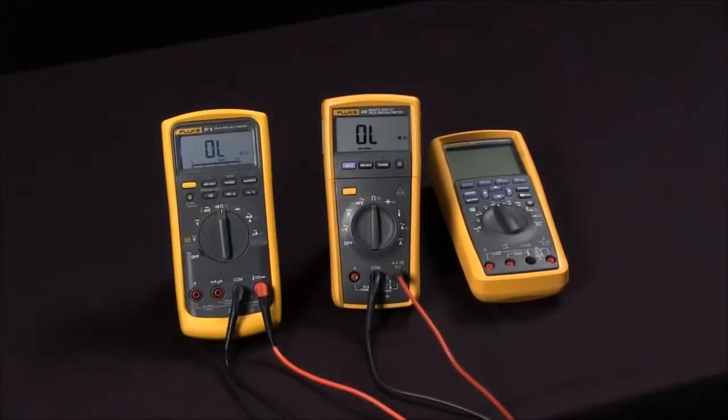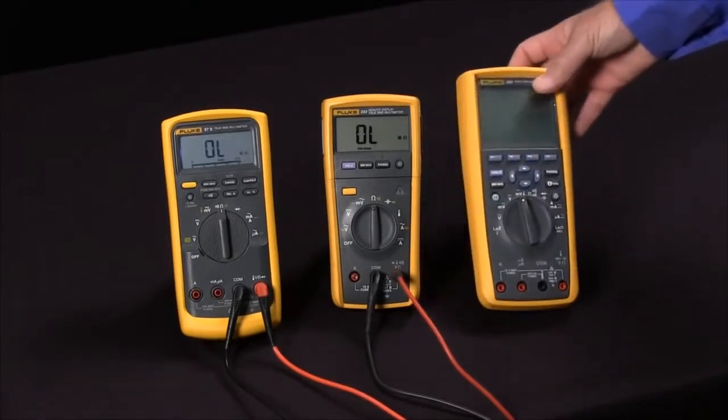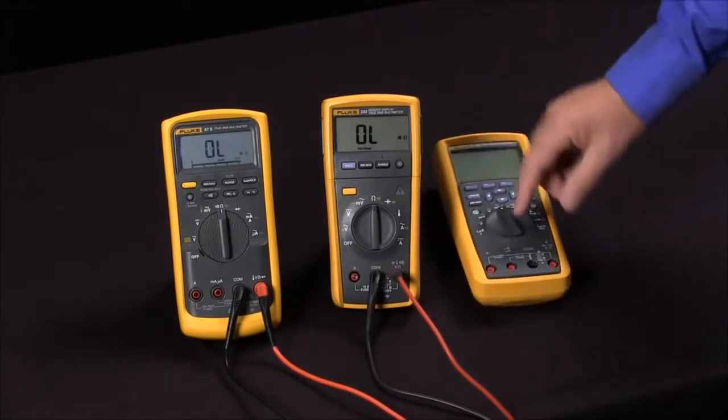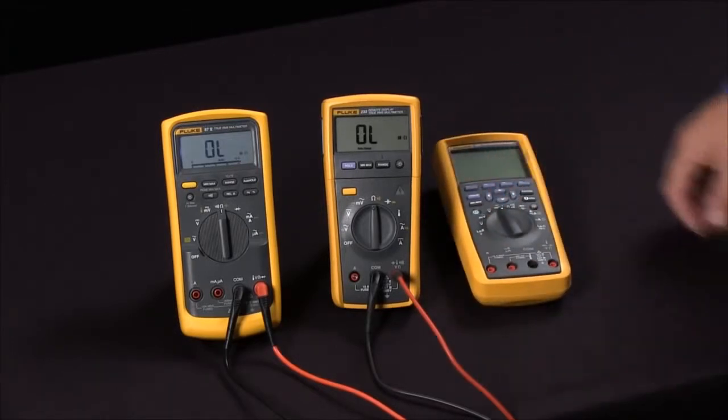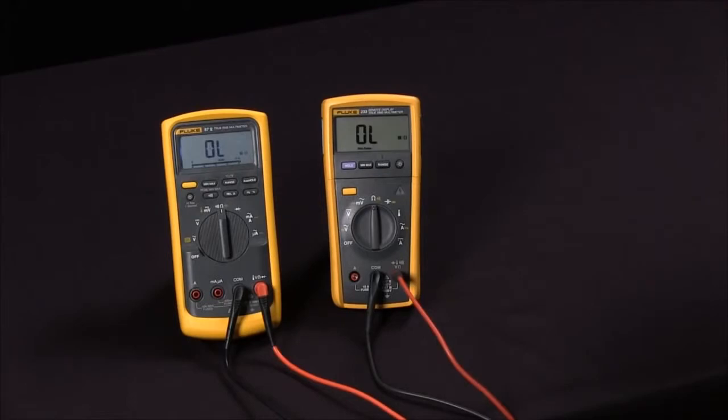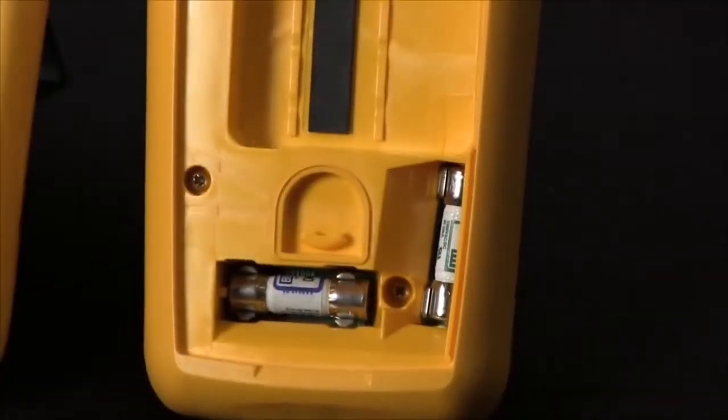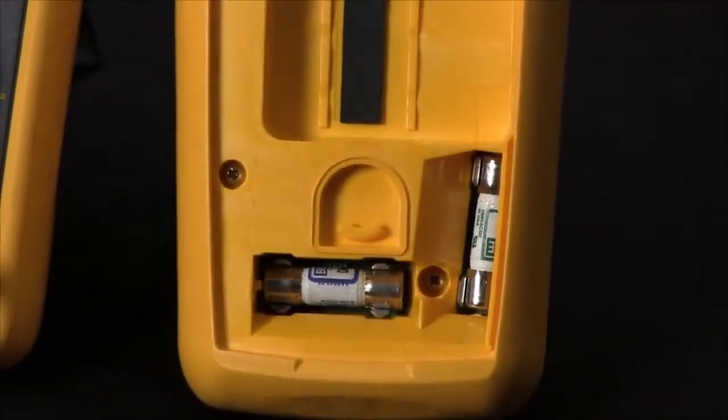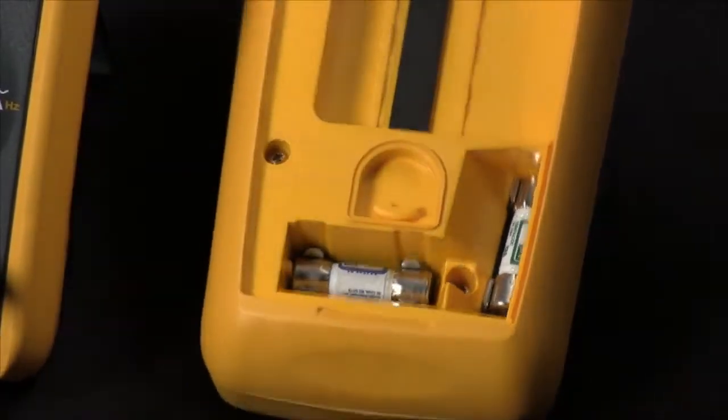We're here today to talk about how to check the fuses in your multimeter without having to open the case. Most multimeters that meet national standards will have fuses on the current input jacks to protect you. These fuses are located inside the meter and they're high energy fuses so they can take quite a lot of load without any sort of damage or injury happening to you.